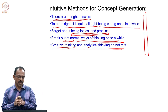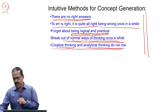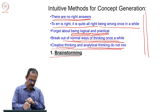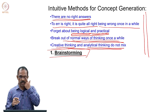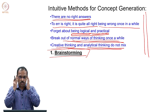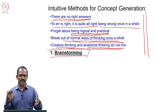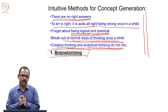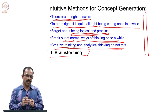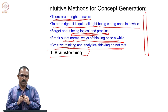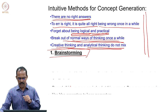With this background, let us talk about the first method of concept generation — brainstorming. Brainstorming is a very commonly used method, as I mentioned in the last class. It is commonly used for many problem-solving issues, not only in product design. Whenever you get a problem to be solved, a few people will sit together and start brainstorming to find a solution. Let us see how we actually do this in a practical scenario.